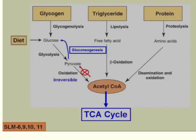When fatty acids are broken down, they go through beta-oxidation. They cannot become pyruvate — they will go straight into acetyl-CoA. That's important because fatty acids cannot form pyruvate as an intermediate.